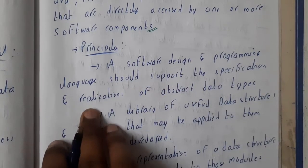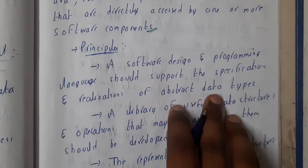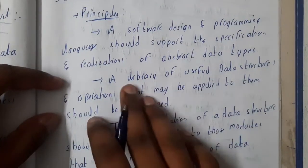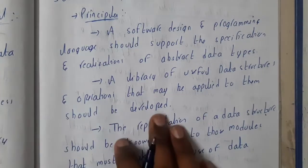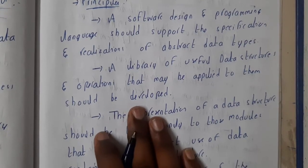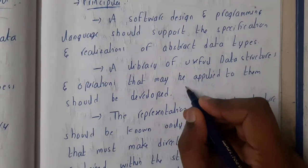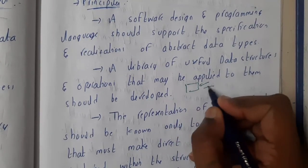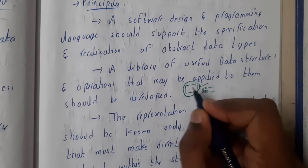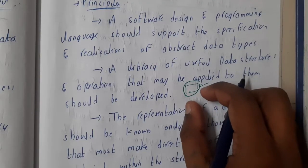There are some principles to follow. A software design and programming language should support the specifications and realizations of abstract data types. A library of useful data structures and the operators applied to them should be developed. Whatever language you are using, the main goal is to create all the required data structures upfront, because even if not needed in this project, they may be useful in another.